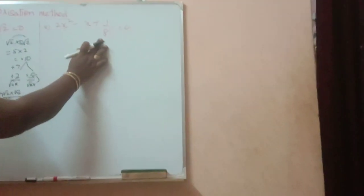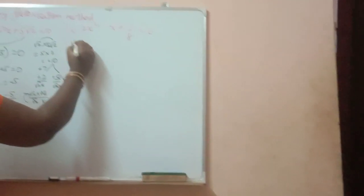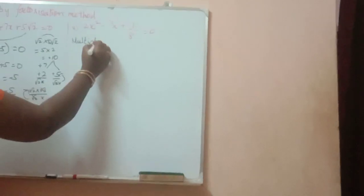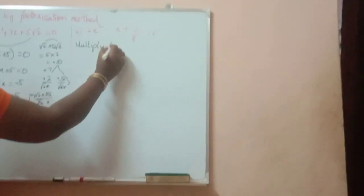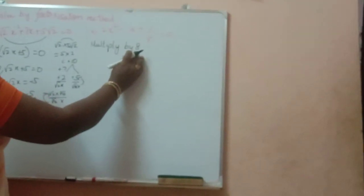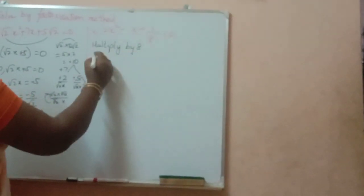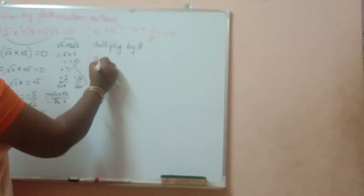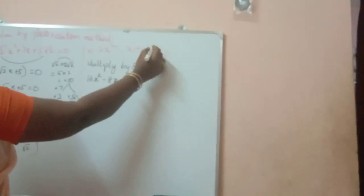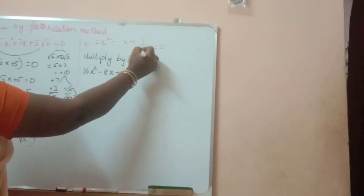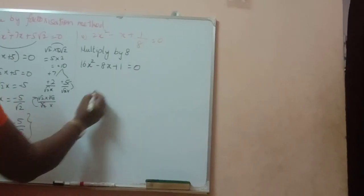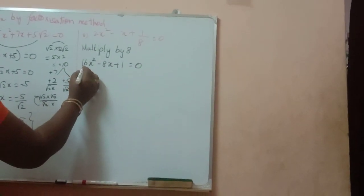Okay. Here, fraction is there. So, multiply by 8. Otherwise, we can take LCM and cross multiply. So, multiply by 8. 16x square minus 8x — if you multiply by 8, then the 8s will be cancelled. So, plus 1 is equal to 0.